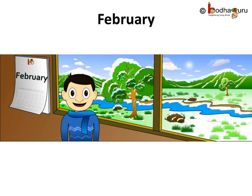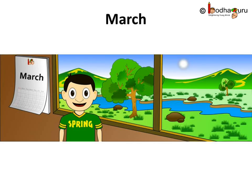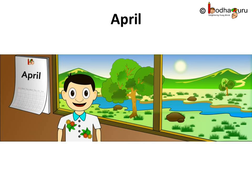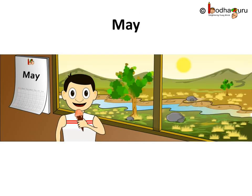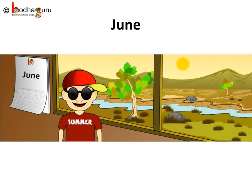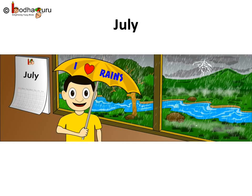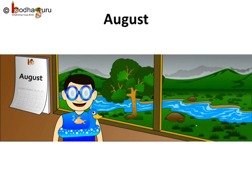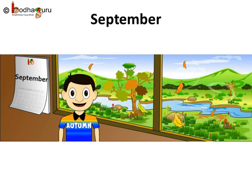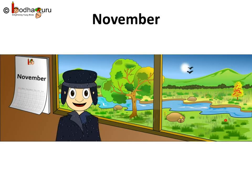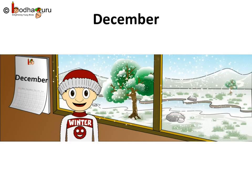The next month is February. Then comes March, then April, then May. The next month is June, then July, then August, September, October, November. And December is the last month of a year.